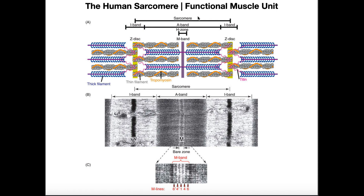Let's discuss the anatomy of the sarcomere. This is usually a confusing topic for students because we have all these bands: A-band, I-band, H-band (sometimes called the H-zone), an M-band (also called M-line), and a Z-disc (also called Z-line). All this terminology — what does it all mean? Let's break it down.